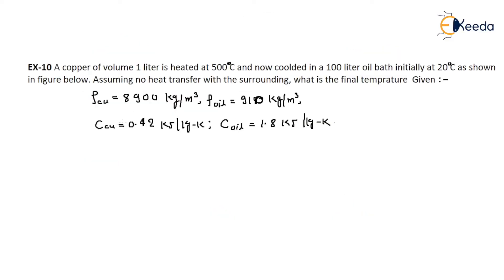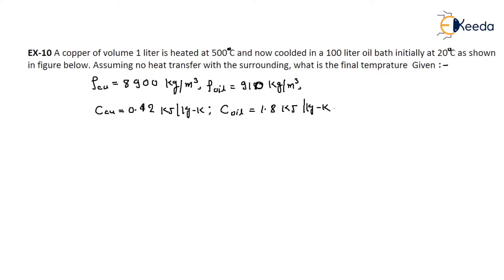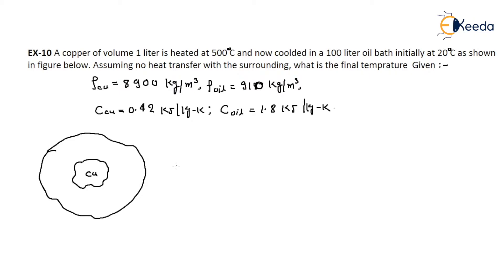Here is a question: a copper of volume one liter is heated to 500 degrees centigrade. It is then cooled in a 100-liter oil bath.